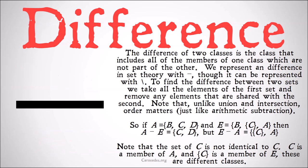The difference of two classes is the class that includes all of the members of one class which are not part of the other. We represent a difference in set theory with a minus sign, though it can be represented with a backslash. To find the difference between two sets we take all of the elements of the first set and remove all the elements that are shared with the second.